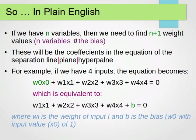So we want n weight for them and 1 for the bias. Remember that we said we can have an input for the bias, but the value of that input is 1. And these will be the coefficients in our equation of our line or plane or hyperplane depending on the number of features or variables.